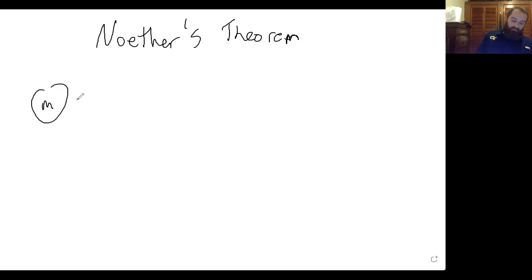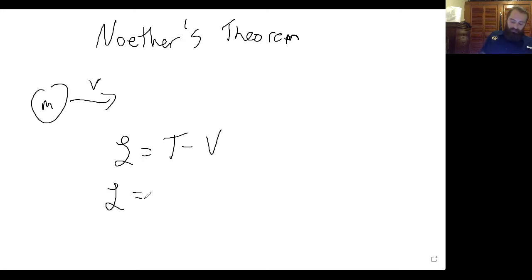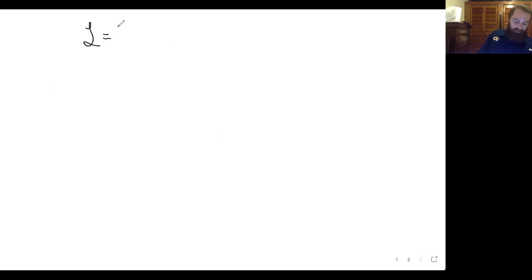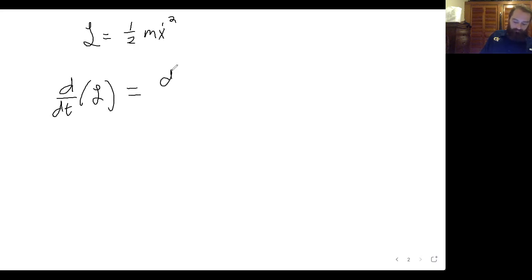Let's say we have a mass m moving at some velocity v. If I want to write down the Lagrangian — the Lagrangian is T minus V. So the kinetic energy is one half m x-dot squared. And there's no potential; let's just say it's moving on a flat surface with no potential energies. So this is our Lagrangian: one half m x-dot squared. Let's take the derivative of the Lagrangian with respect to time.